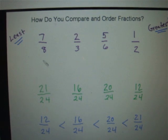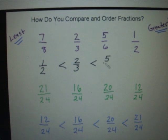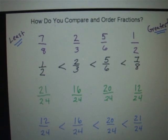Writing our original fractions from least to greatest: 1/2 is the smallest, because that's 12/24, and that's less than 2/3, which is 16/24, and that's less than 5/6, which was 20/24, which is less than 7/8, which was 21/24. And that's how you compare and order fractions.